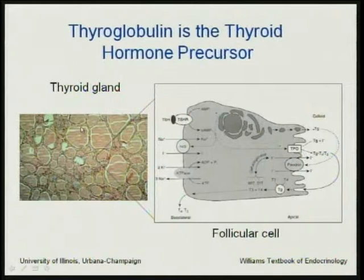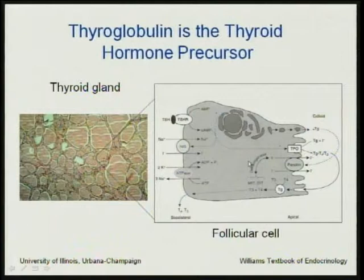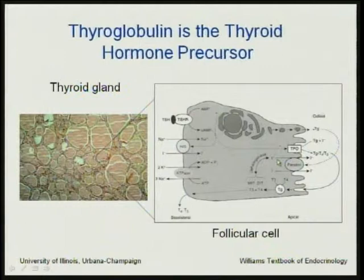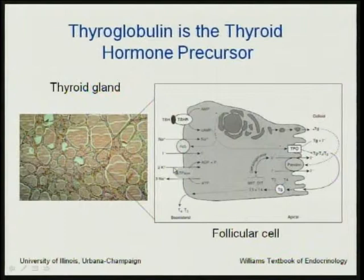Surrounding this colloid — also called the follicle — is the follicular cell, which is responsible for making the thyroglobulin and spinning it into the colloid. When thyroid stimulating hormone (TSH) impinges on the TSH receptor, the thyroglobulin is brought back into the cell. The thyroid hormones T3 and T4, which are assembled out of tyrosine residues on the surface of the thyroglobulin, are picked off and sent across the basolateral membrane into the circulation. So the thyroglobulin is supposed to be out in the colloid — not supposed to be in the circulation.